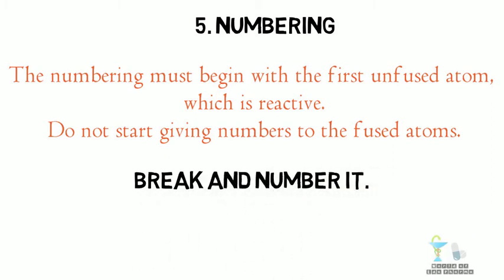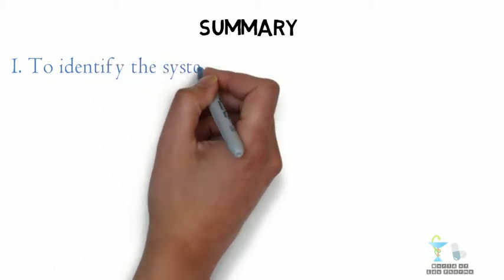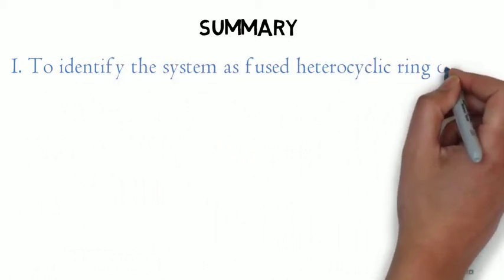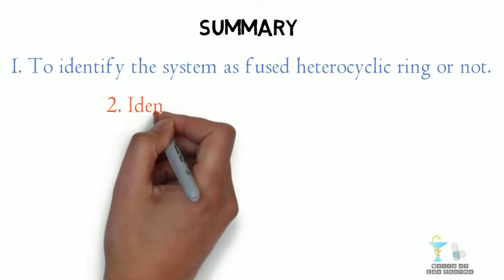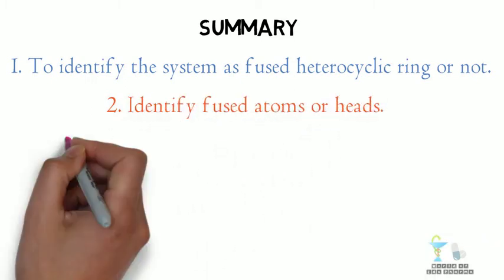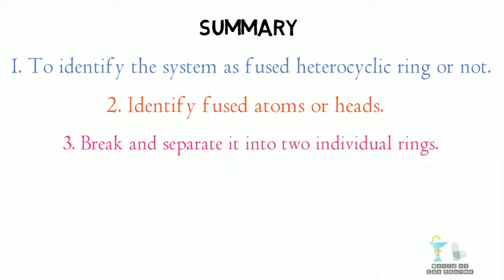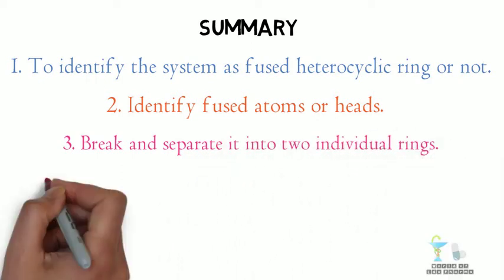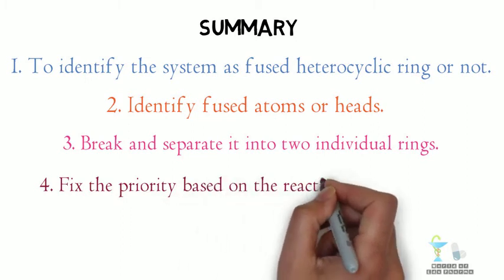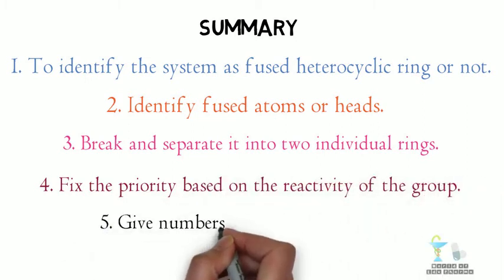Now let us summarize all the points: 1. Identify the system as fused heterocyclic ring or not. 2. Identify fused atoms or heads. 3. Break and separate it into two individual rings. 4. Fix the priority based on the reactivity of the group. 5. Give numbers and label alphabets.